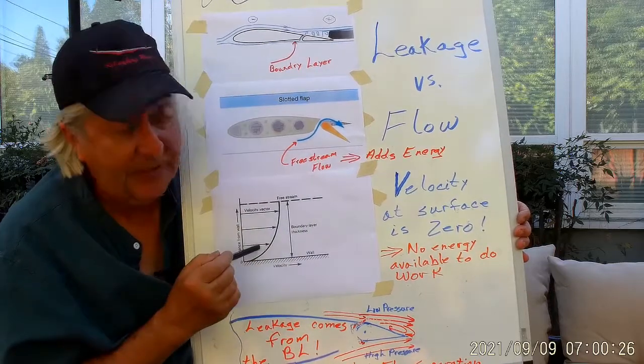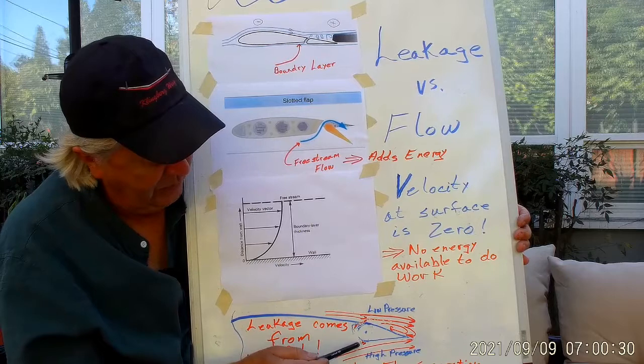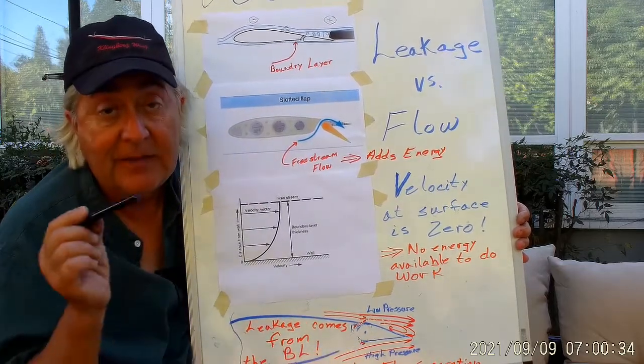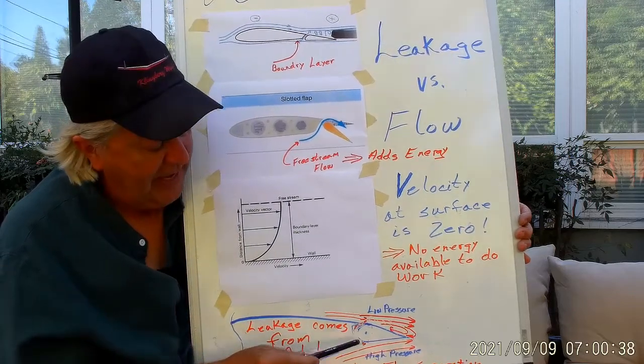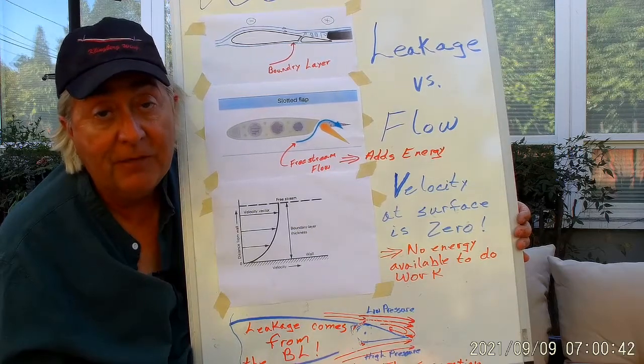So that's the difference. Free stream versus peeling off the boundary layer. Now, one last thing in case somebody's wondering, well, why is it just a boundary layer? Why isn't some free stream going up in there? That's because the flow is inviscid. This is incompressible flow. And if you have a sharp corner here, the only thing that you can bleed off is the boundary layer.